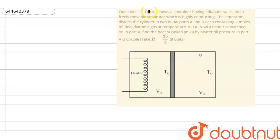The question says, figure shows the container having adiabatic walls and a freely movable separator which is highly conducting. So the separator is highly conducting. The separator divides the cylinder in two equal parts A and B. Each contain two moles of ideal diatomic gas at a temperature of 300 Kelvin.